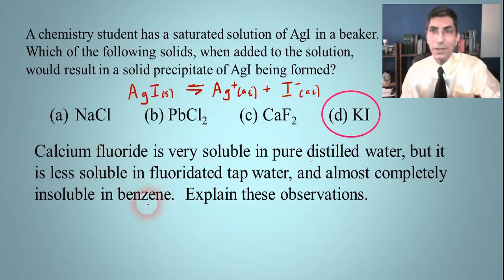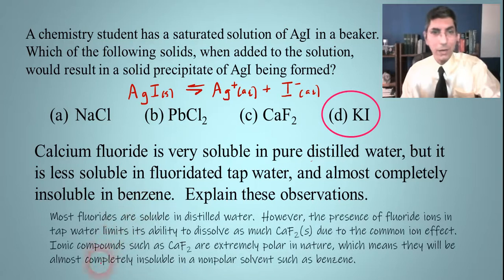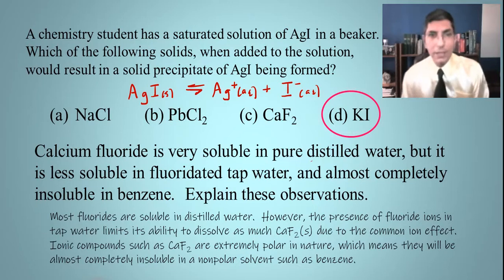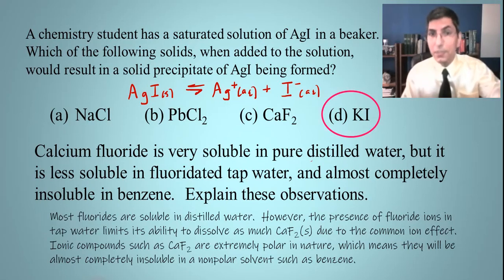So here's the full answer. Let's see how close we got. It says most fluorides are soluble in distilled water—well, we already knew that, didn't we? However, the presence of fluoride ions in tap water limits its ability to dissolve as much solid calcium fluoride due to the common ion effect. Ionic compounds such as calcium fluoride are extremely polar in nature, which means they will be almost completely insoluble in a non-polar solvent such as benzene.